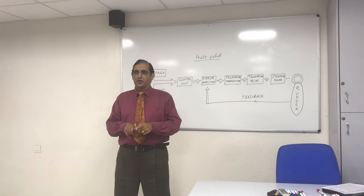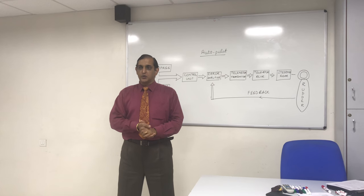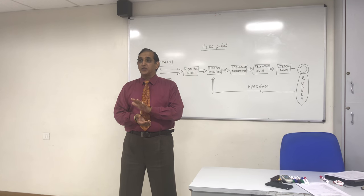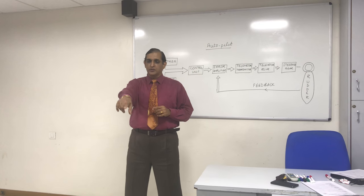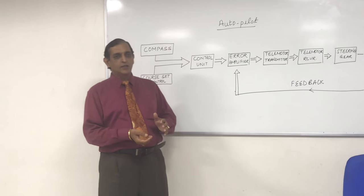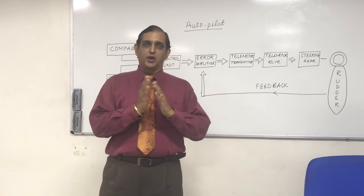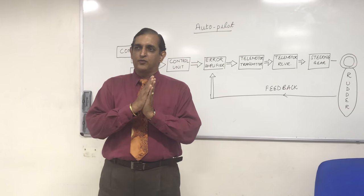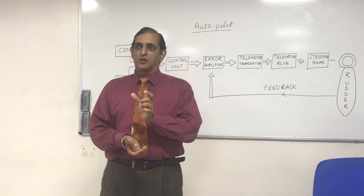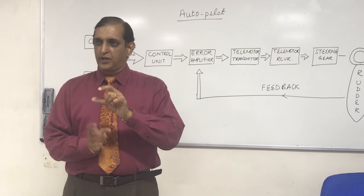Whenever you change over from hand steering to autopilot, you will have to look at these controls. The first control is the rudder control, which basically determines the sensitivity of the system. In other words, it says how much helm is to be used per degree of course error — for example, 1 degree helm per degree of course, 2 degrees, or half a degree, depending on the setting. Some autopilots call it the sensitivity control. It will govern how much helm is to be used.